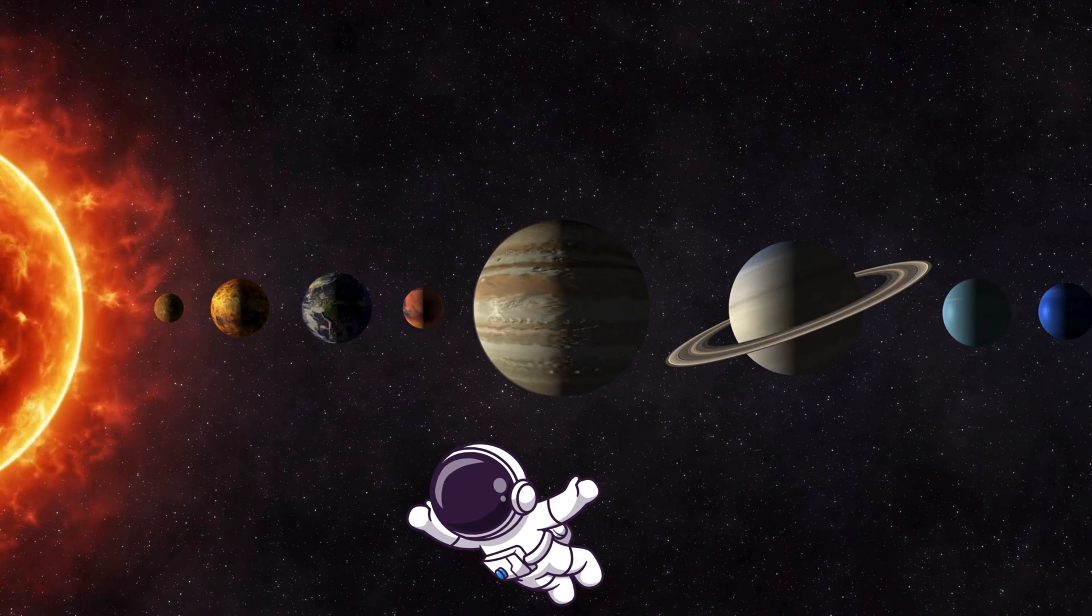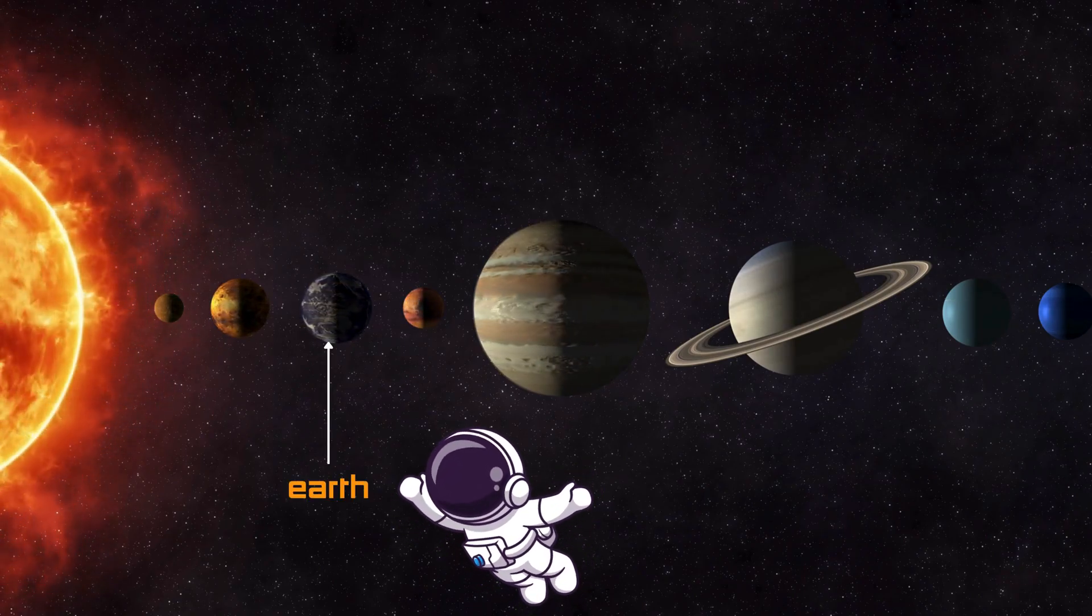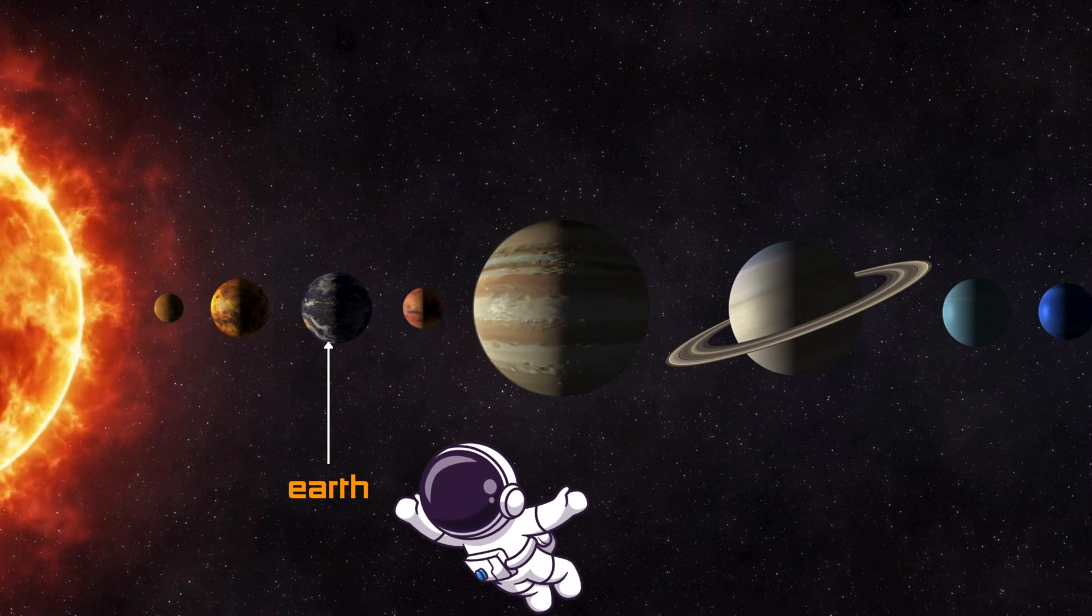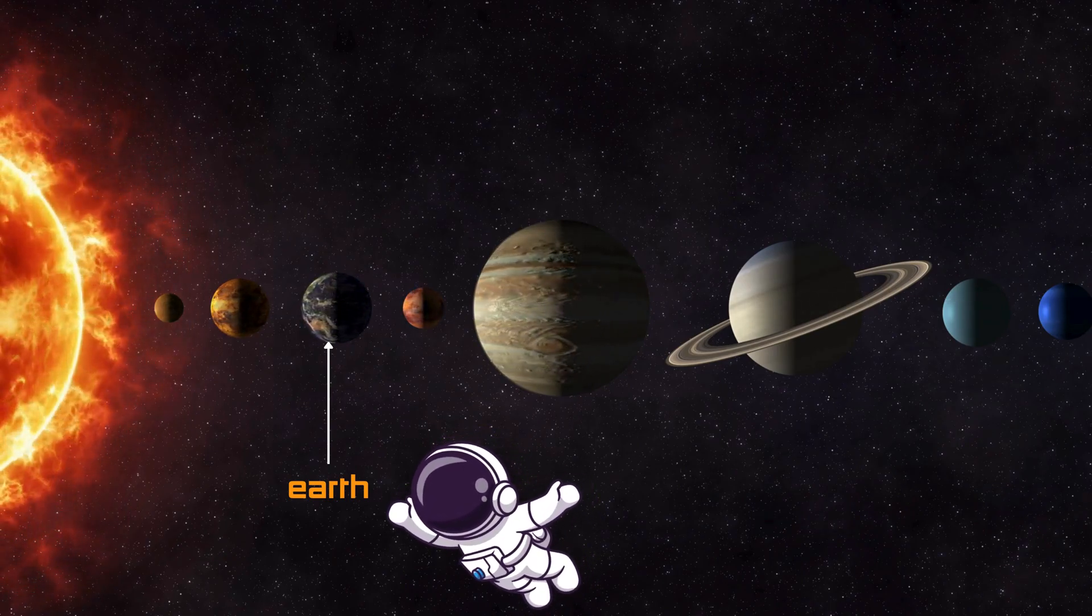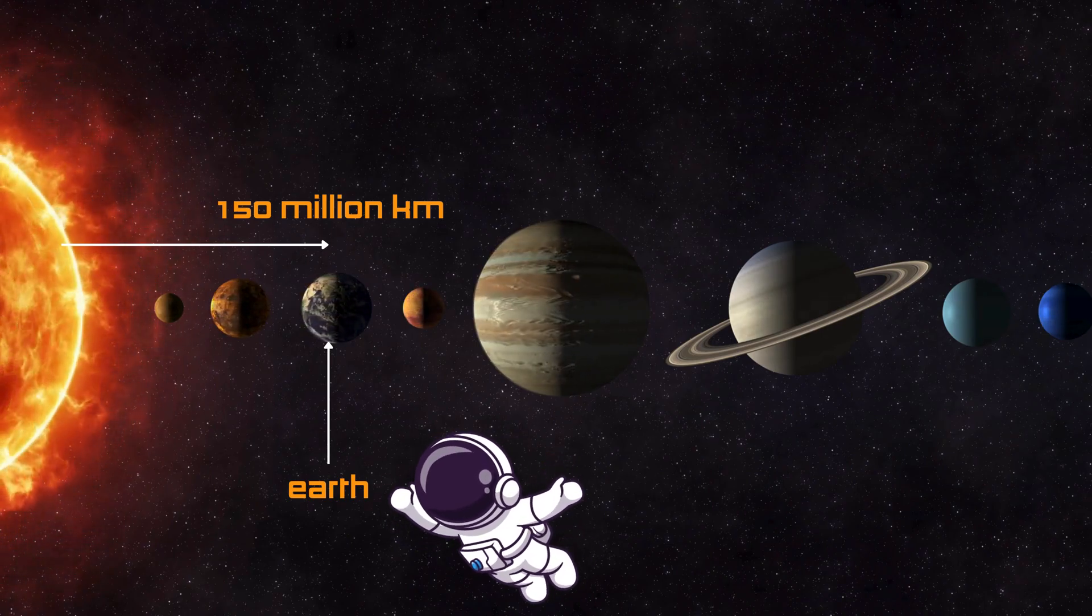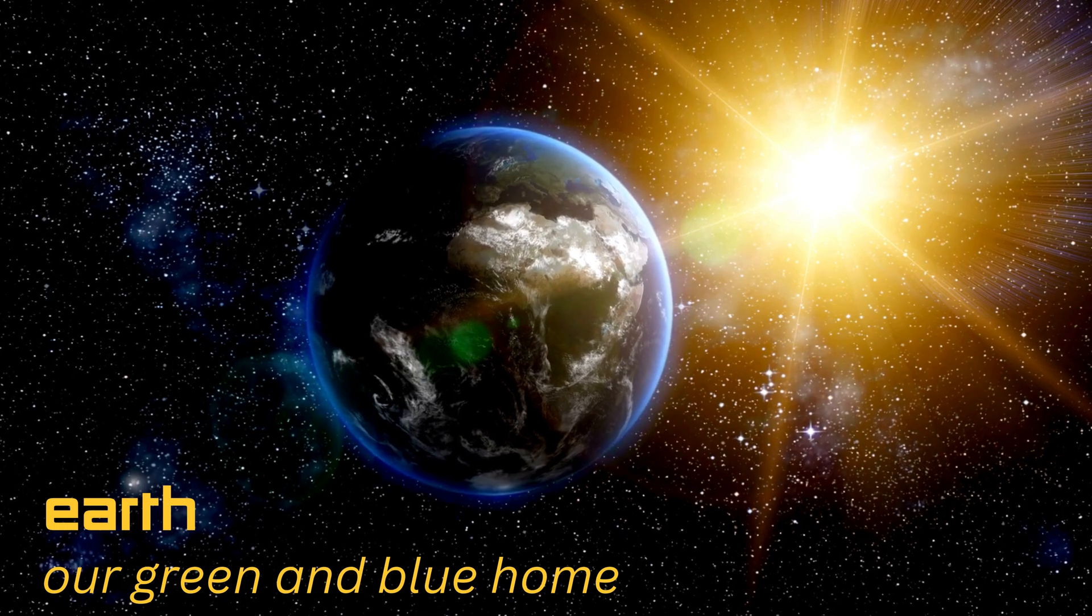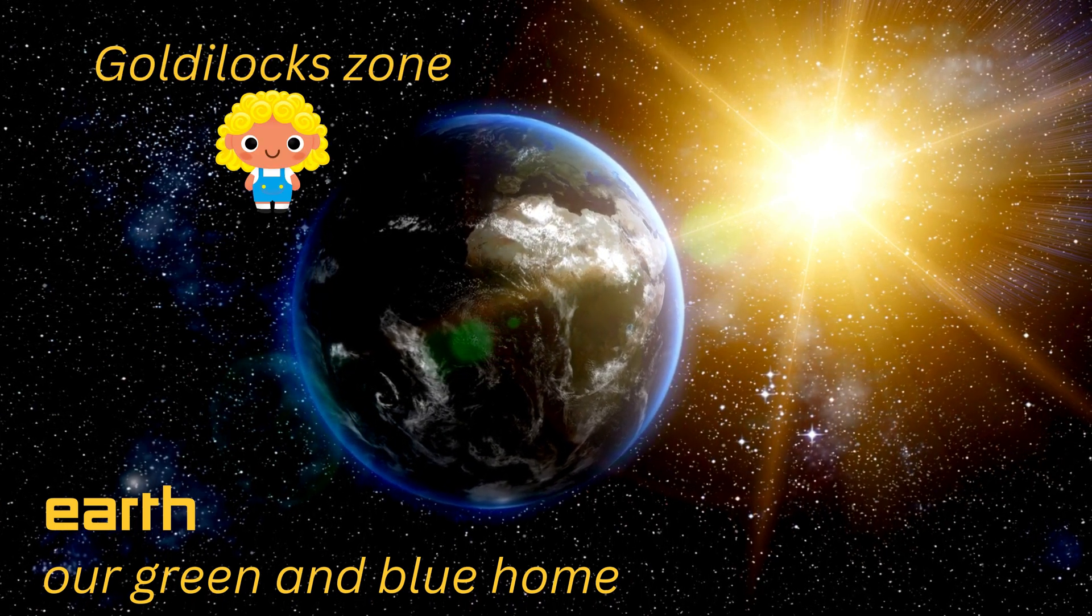Now, let's visit the planet we all know and love, Earth. Earth is the third planet from the sun, sitting at just the right distance, 93 million miles, 150 million kilometers away. It's not too hot, not too cold, it's just right for life. That's called the Goldilocks Zone.